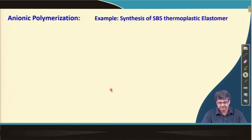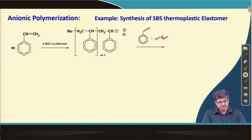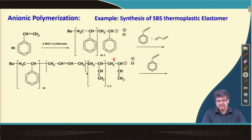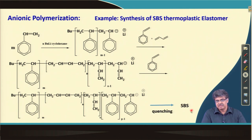An important use of anionic polymerization is the synthesis of SBS (styrene-butadiene-styrene) thermoplastic elastomers. Butyl lithium in cyclohexane generates the first block of polystyrene as a living chain. Adding the second monomer — a combination of styrene and butadiene — produces the middle block, and then adding styrene again gives the third block. The result is a tri-block copolymer: polystyrene — poly(styrene-co-butadiene) — polystyrene.